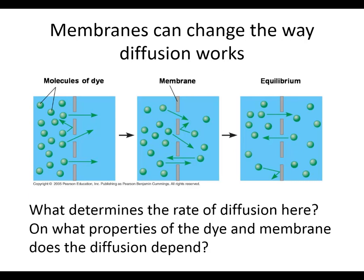Membranes can change the way diffusion works. Diffusion does not require a membrane — it's a force that just happens. But if there's a membrane in the way, that force can be influenced. We have molecules of dye all on the left side, a membrane with gaps — little holes or pores — and the molecules move through the membrane until equilibrium is reached. What properties affect the rate of diffusion? Temperature — the hotter things are, the faster molecules bounce around. That is what temperature is.